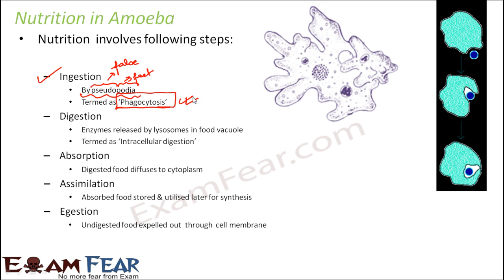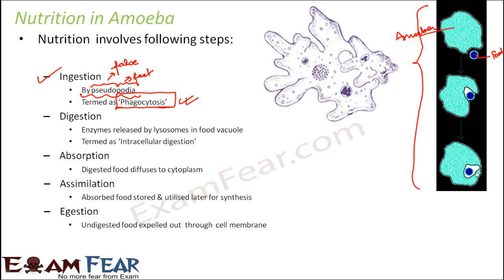Phagocytosis is very important and very interesting. Here we can see the exact process of how amoeba takes in food. This is the body of amoeba — its shape keeps changing. The shape changed in such a way that the food particle got trapped. The amoeba changed its shape such that the food particle got trapped inside, and by the end the food entered inside the body of amoeba — ingestion happened due to the movement of the pseudopodia.